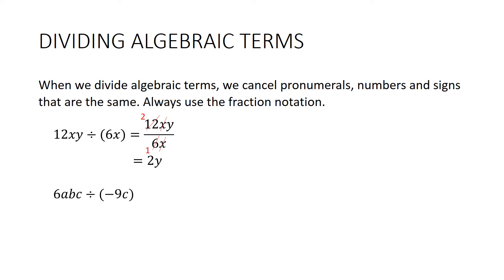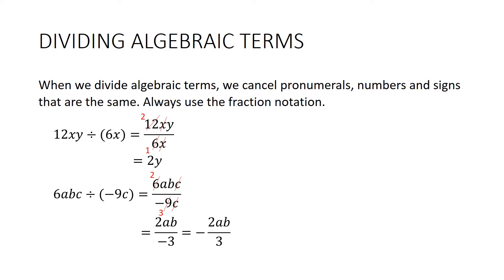In this case, 6abc divided by negative 9c — use fraction notation. The c's cancel, and 6 and 9 have a common factor of 3. 3 into 6 goes twice, 3 into 9 goes 3 times. We've got 2ab on top and negative 3 on the bottom. Remember from the last video we don't write a negative on the bottom of a fraction — it floats up. So the correct answer is negative 2ab on 3.